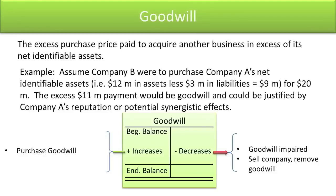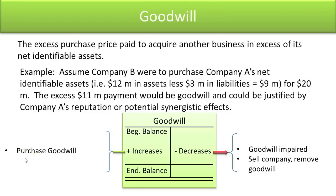Goodwill, like copyrights, patents, and trademarks, is an intangible asset — you can't touch it, but it does have value. It represents the excess purchase price paid to acquire another business over its net identifiable assets. For example, if Company B purchases Company A, which has $12 million in assets and $3 million in liabilities (net identifiable assets of $9 million), but pays $20 million, the $11 million excess is classified as goodwill — justified possibly by Company A's reputation or synergistic effects. Goodwill increases when you purchase companies in excess of their net identifiable assets, and is reduced when it is impaired (e.g., reputation is significantly damaged) or when you sell the company to which the goodwill relates.